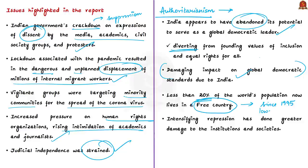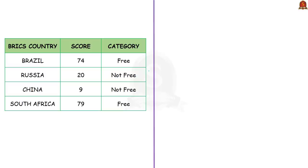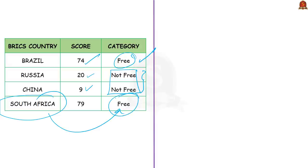The report also notes intensifying repression in not-free countries, making it increasingly difficult to fulfill public demands for freedom and prosperity under any future government. India is among the countries with the largest declines last year. Comparing India with BRICS countries: Brazil has a score of 74 and remains free; Russia and China are not free; and South Africa has the highest score among BRICS nations and is in the free category.